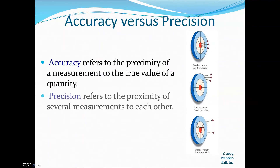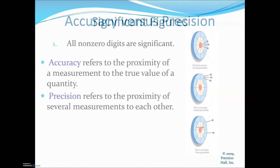Two definitions: accuracy and precision. Accuracy refers to the proximity of a measurement to the true value of a quantity. Precision refers to the proximity of those measurements compared to each other. Accuracy is like hitting a bullseye on a dartboard. Precision is getting your darts within the same proximity of each other. If you can do both, you have good accuracy and good precision. If you can't get close to the bullseye but your darts are close together, you have good precision but poor accuracy. And if you completely can't do either, you have poor accuracy and poor precision.